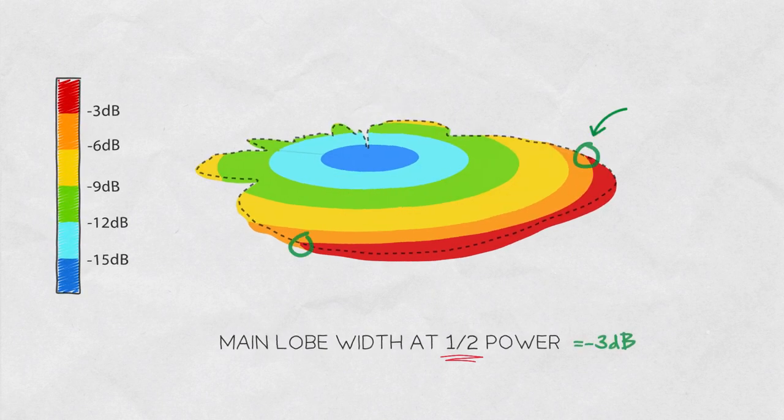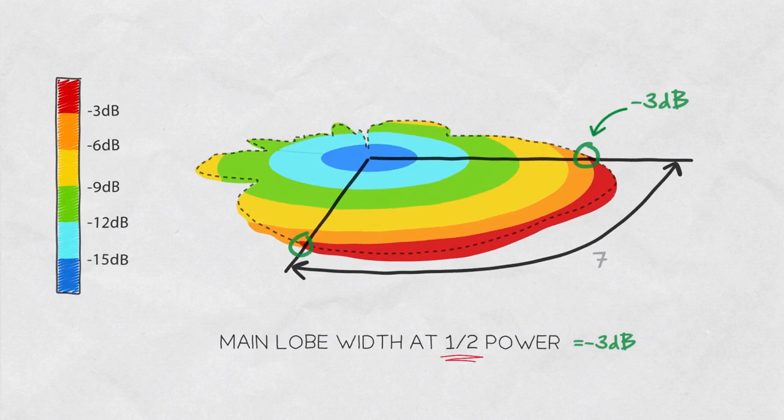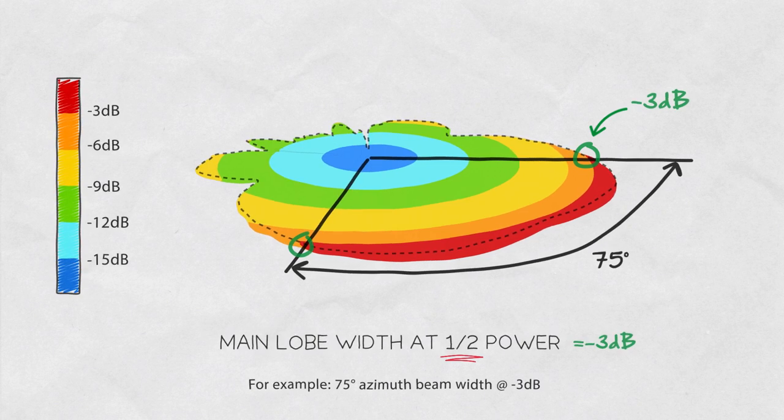Half power corresponds to negative 3dB on the logarithmic scale. You can see this information next to the measured angle, for example a 75 degree azimuth beam width at negative 3dB.